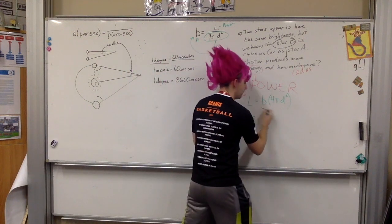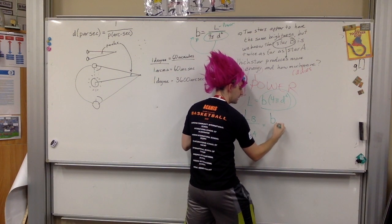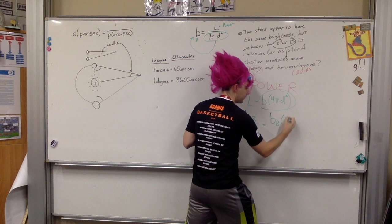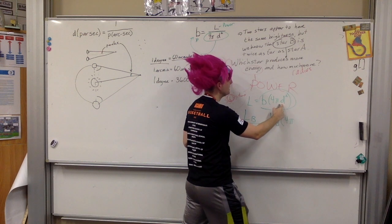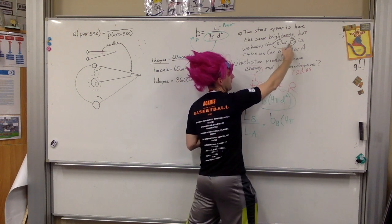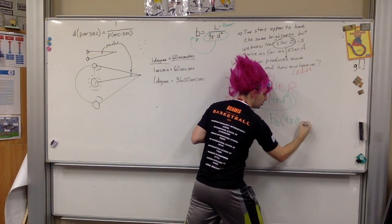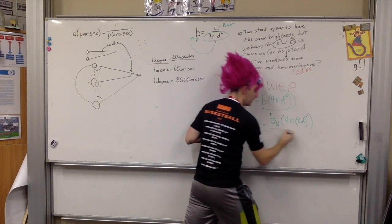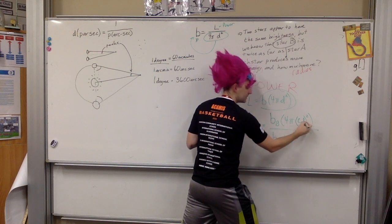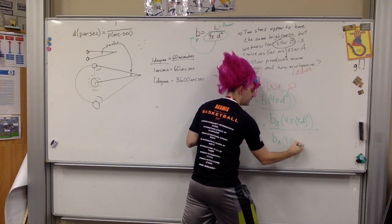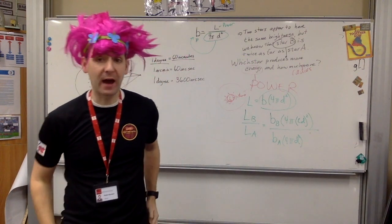So, this is now going to be this right here. I'm going to put in the apparent brightness of B, times 4 times pi times d. Now, d for B is twice as far as A. So, I'm actually going to put in here 2d. Now, that does have to be squared. Now, this is all over the apparent brightness of A. And then again, 4 pi. Since I made this 2d, that means that A has to be a distance of d away.